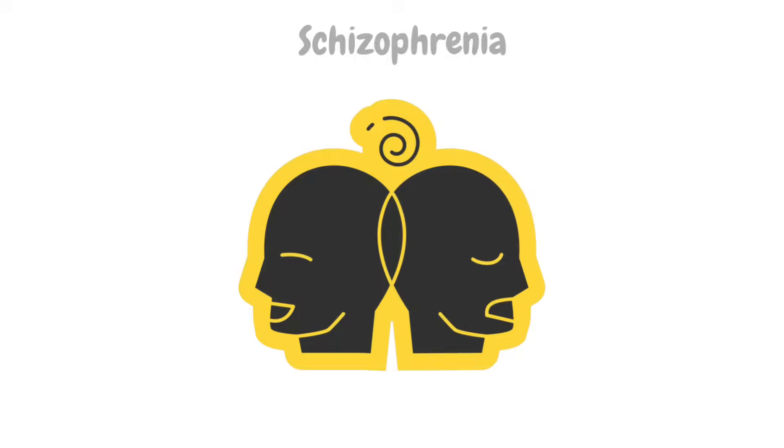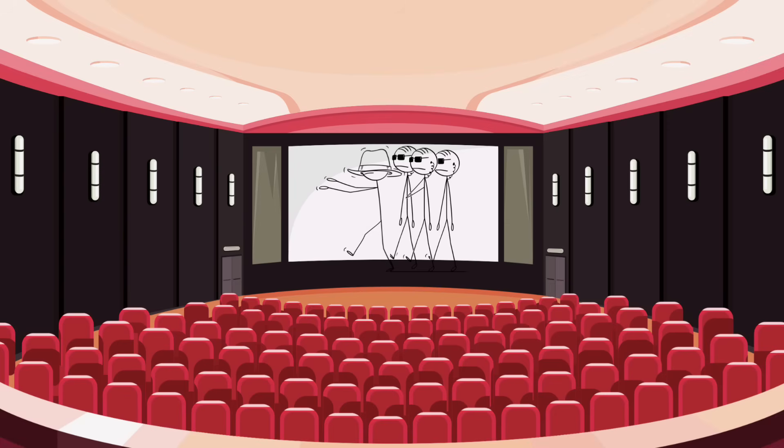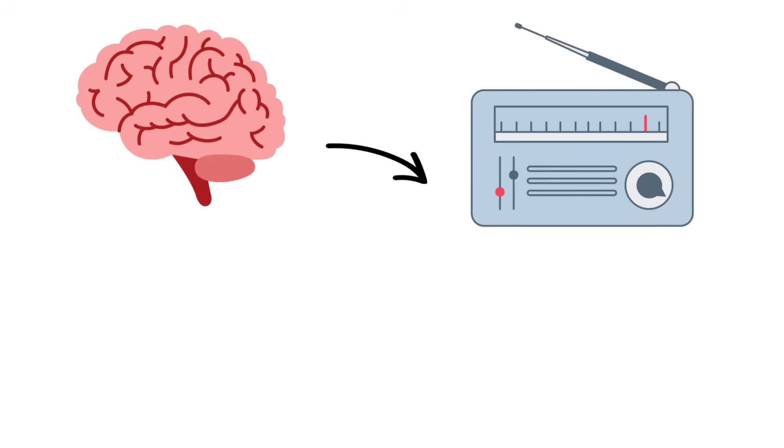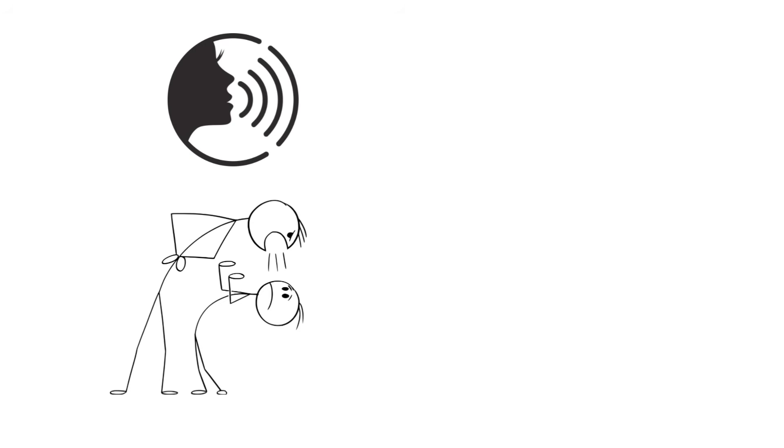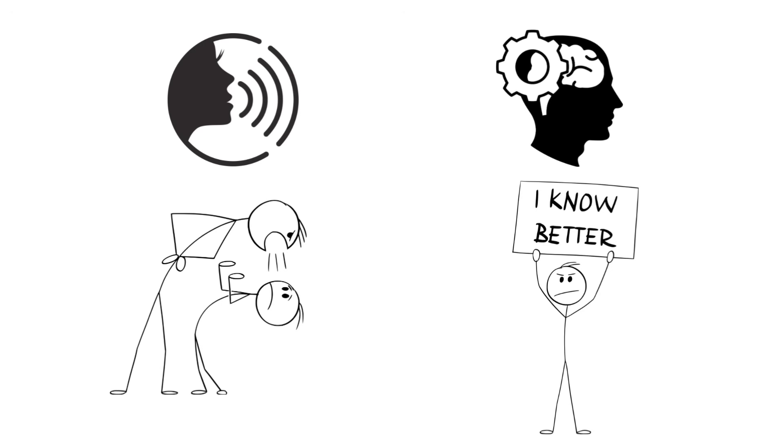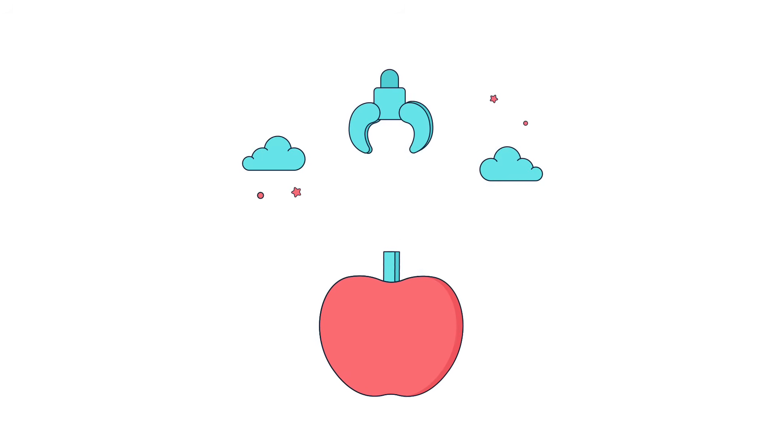That's a peek into life with schizophrenia. People with this condition might hear voices, see things, or believe in entire alternate realities, like they're starring in their own secret agent movie, except they're the only one who bought a ticket. Their brain? Think of it as a radio stuck in scan mode. One minute, it's tuned into this reality. The next, it's picking up a station from a galaxy far, far away. And it's not just voices. Schizophrenia can come with strong beliefs that feel as real as gravity, even if nobody else shares them.